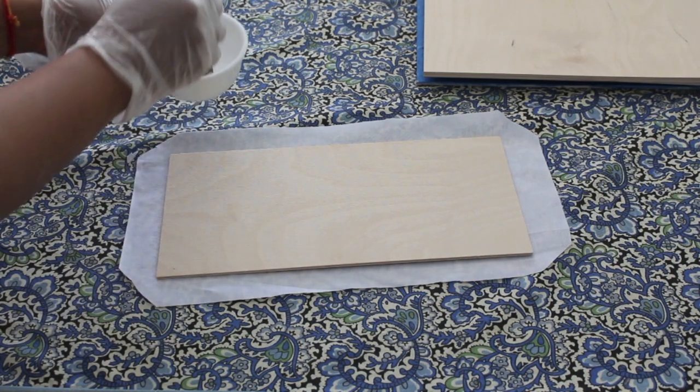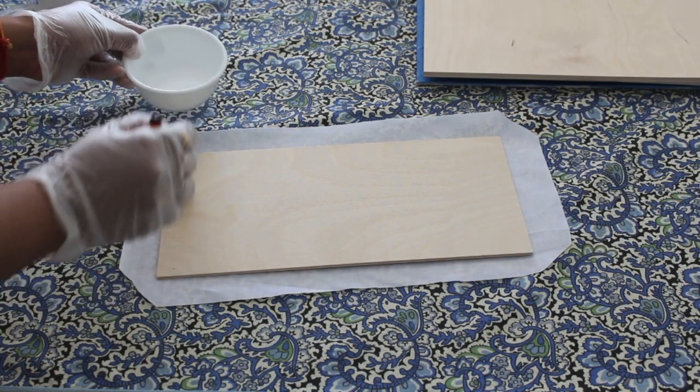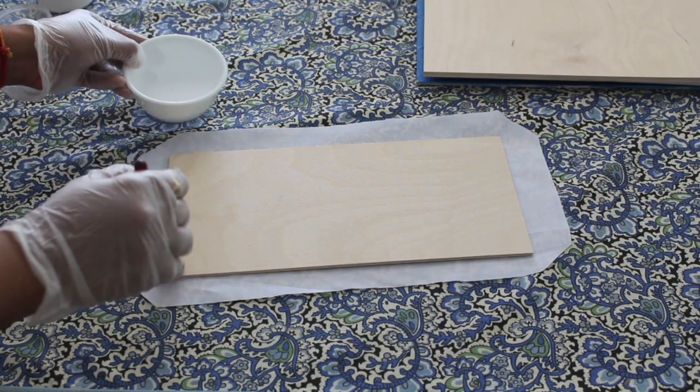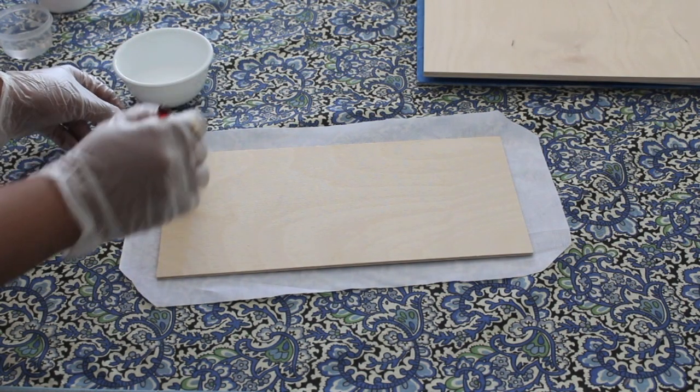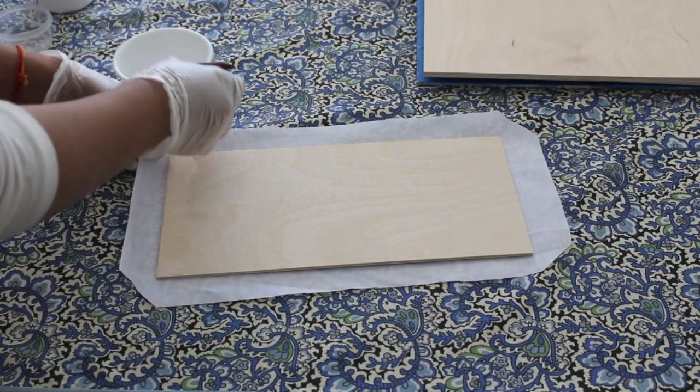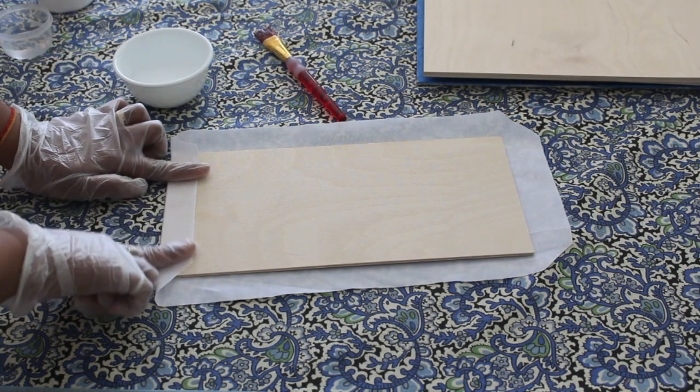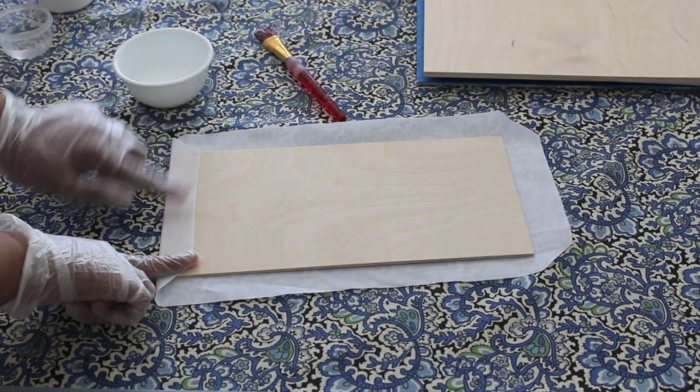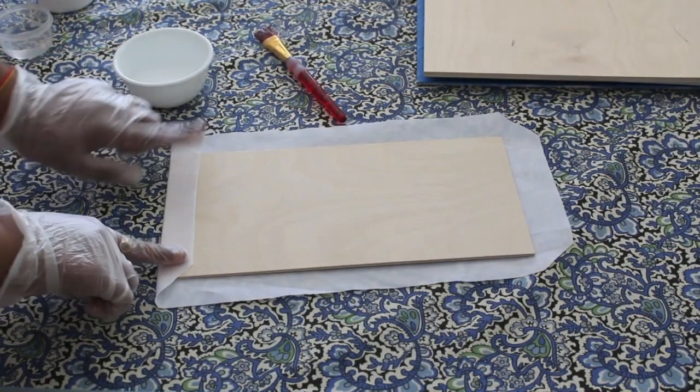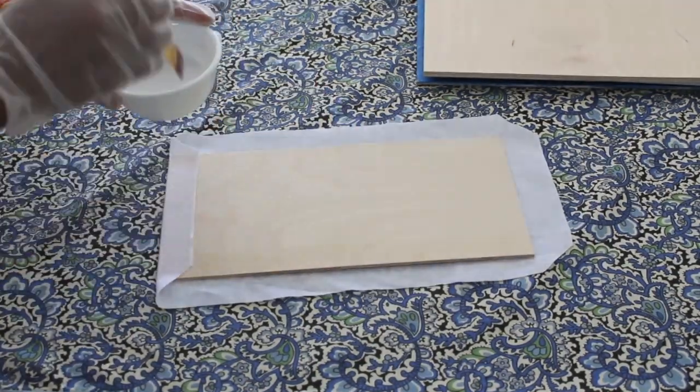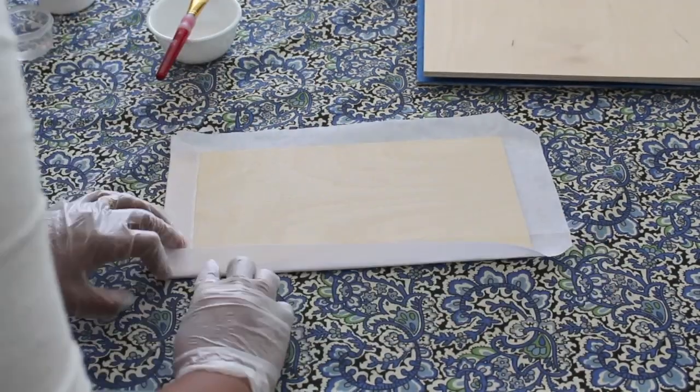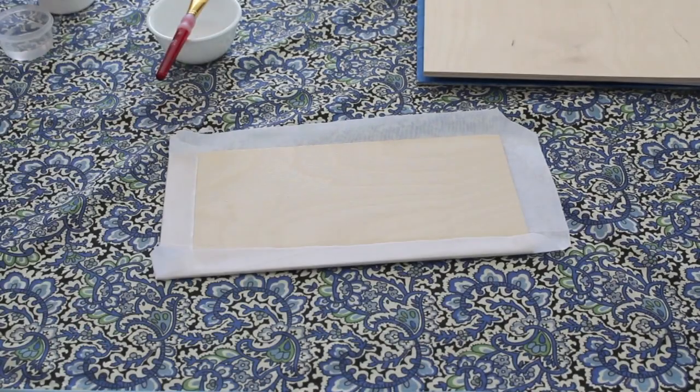When you're gluing the corners, cut off any excess cloth at the corners to avoid it from bunching together. Do this on all four sides.